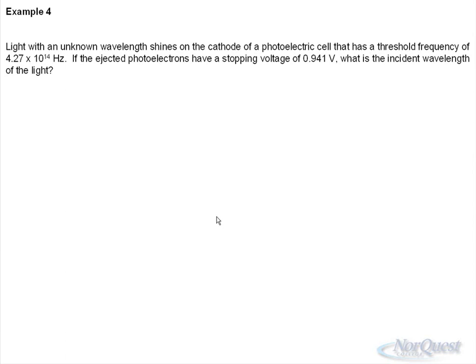So it says light with an unknown wavelength shines on a photoelectric cell with a threshold frequency, so now we have f₀ = 4.27 × 10¹⁴ hertz. If the ejected photoelectrons have a stopping voltage of 0.941 volts, what we want to find is the incident wavelength of the light. So that's all we're given in this case.